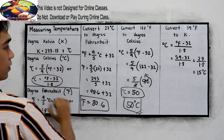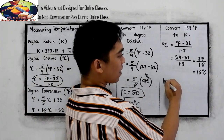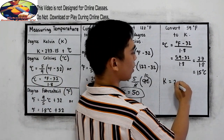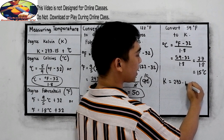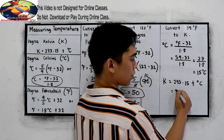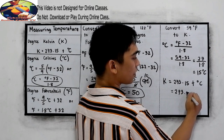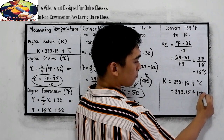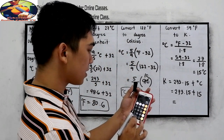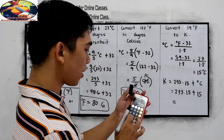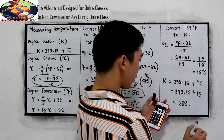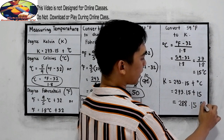Now, Kelvin is equal to 273.15 plus degrees Celsius. So 273.15 plus 15. Our final answer is 288.15 Kelvin.